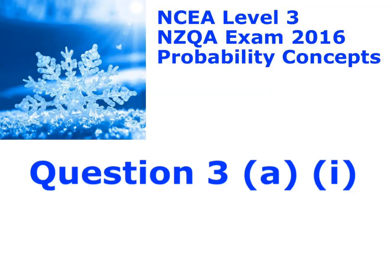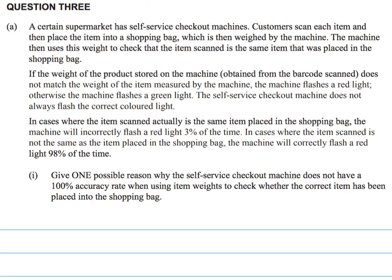Here is question 3a part 1. We are looking at a supermarket with some self-checkout machines, where customers scan the item and place it in the shopping bag one item at a time. If the weight does not match the expected weight stored in the machine, a red light goes off. Otherwise, it flashes a green light.